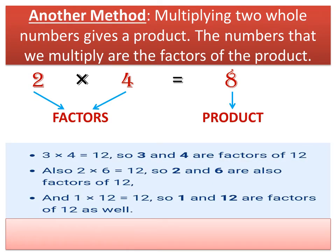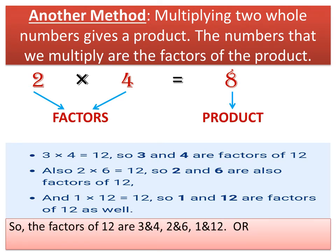See the next example. 3 multiplied by 4 equals 12, so 3 and 4 are the factors of 12. Also, 2 multiplied by 6 equals 12, so 2 and 6 are also the factors of 12. And 1 multiplied by 12 equals 12, so 1 and 12 are the factors of 12. So the factors of 12 are 3 and 4, 2 and 6, and 1 and 12.